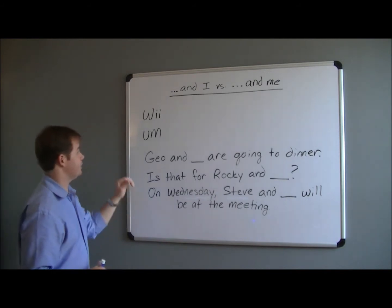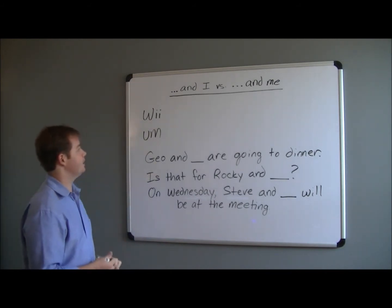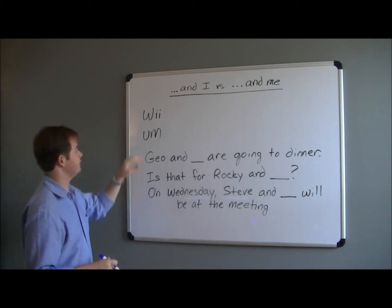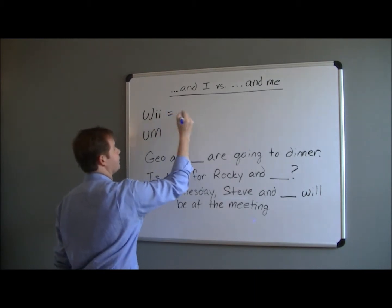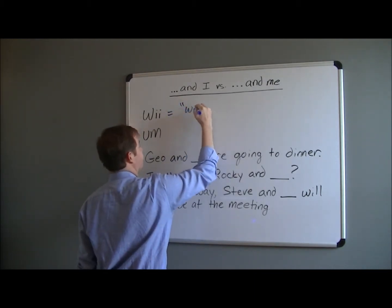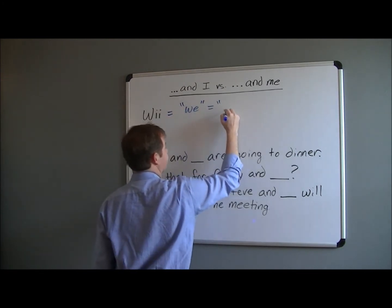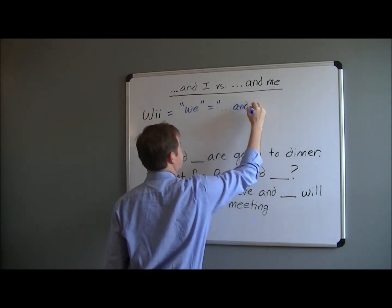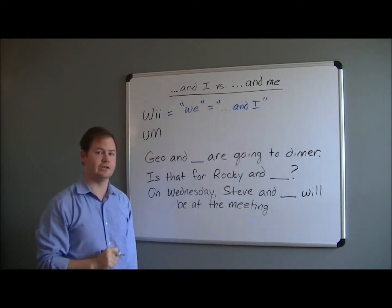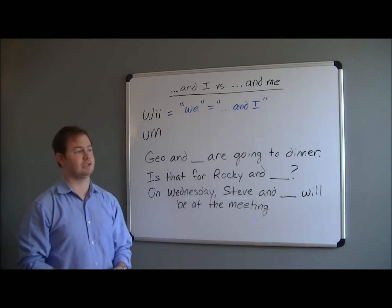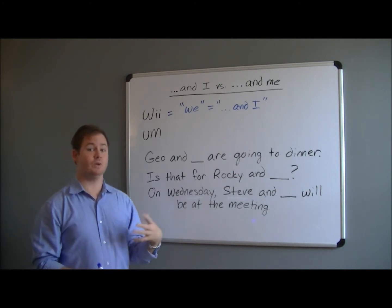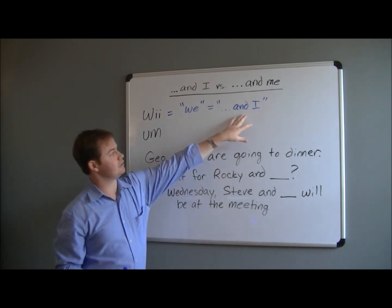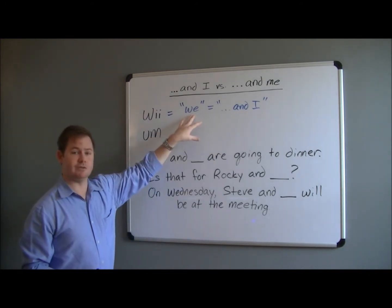Let's take a look at a good way of remembering this rule — I call this the Nintendo Wii rule. If you look at the way Wii is spelled, W-I-I, that's a good reminder that the word 'we' and the use of 'blank and I' are interchangeable. For example, if you say 'my friend and I are watching TV,' you can replace it with 'we are watching TV,' which confirms that 'and I' is correct.